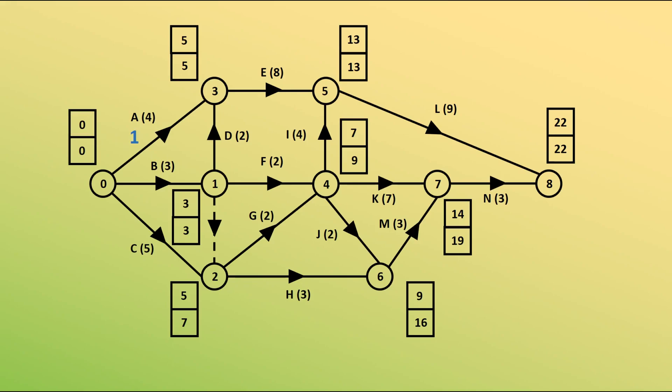For b, 3 take away 0 take away 3 is 0. For c, 7 take away 0 take away 5, float of 2. D, 5 take away 3 take away 2 is 0. E, 13 take away 5 take away 8 is 0.